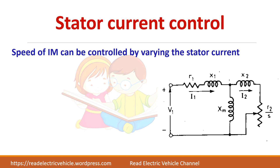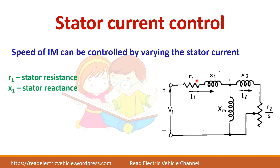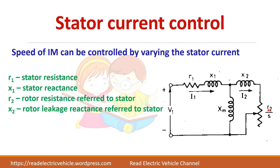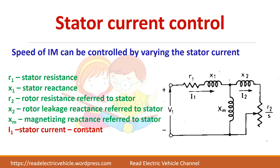First, let us draw the equivalent circuit of the induction motor. Here V1 represents the applied stator voltage and I1 is the stator current — it is a constant current we are applying to the stator. The suffix 1 represents stator parameters and 2 represents rotor parameters. R1 and X1 are stator resistance and reactance. X2 and R2 refer to rotor leakage reactance and rotor resistance. Xm is the magnetizing reactance. I1 is the stator current and I2 is the rotor current.